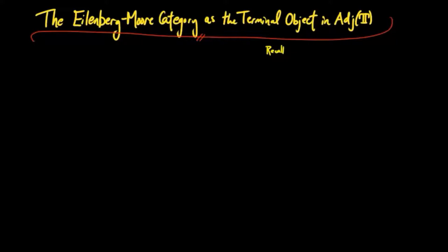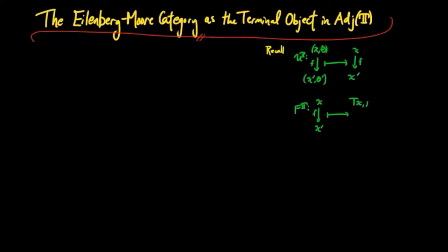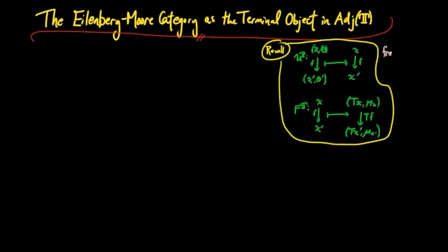Recall that the forgetful functor takes an object in the Eilenberg-Moore category and forgets the T-action, and takes a T-equivariant map to its underlying morphism. The free functor for the Eilenberg-Moore construction takes an object x to the Eilenberg-Moore object Tx, with T-action given by the multiplication of the monad, and it takes the morphism f to the T-equivariant map Tf.